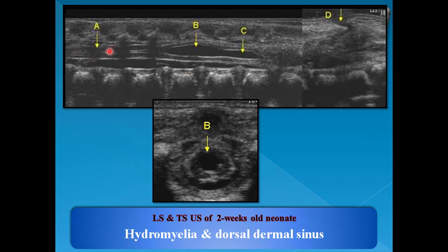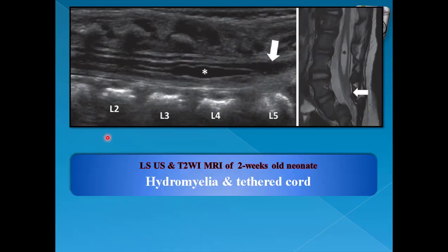Transverse image will show the transition of the normal cord into the cord which surrounds a CSF collection. This is an example showing the normal central spinal canal — very narrow — then becoming widened in a focal form of hydromyelia. There is an associated dermal sinus tract. The TS image shows the spinal cord surrounding a collection of CSF, and the dilated central spinal canal. Another example shows the cord tethered ending at L5 vertebra on sagittal T2 MRI.